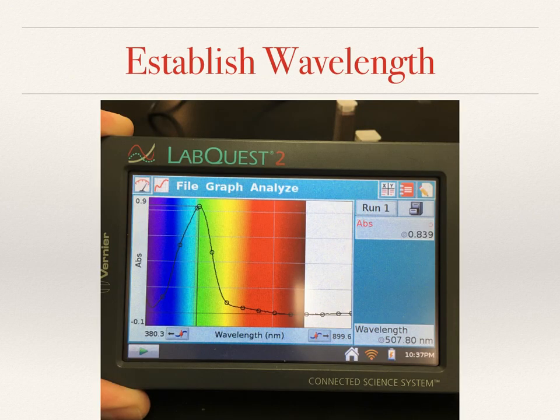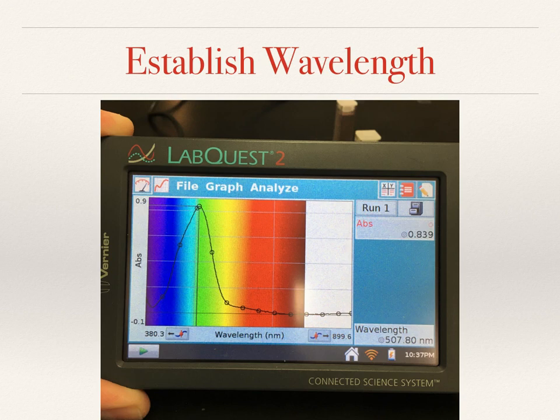The first step when using your LabQuest and the SpectraViz is to establish the wavelength of maximum absorbance. Typically what you do is take your most concentrated sample, put it in your LabQuest, and run the absorbance. We can see on this graph that it's a little bit less than 0.9, so it's within our threshold — below 1, which is great. We press stop on our LabQuest, pick the highest point on the graph, and that establishes a wavelength. The wavelength we've established is about 507.8 nanometers.